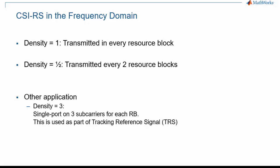Let's talk about the frequency and time domain characteristics of CSI-RS, starting with the frequency domain. There are two main types of CSI-RS in the frequency domain: density one and one-half. With density one, CSI-RS are present in every resource block. With half density, they are present in every other resource block. The third type, very dense in the frequency domain with density three, is called Tracking Reference Signal, as mentioned earlier. This type of CSI-RS is single port, whereas the other CSI-RS can support up to 32 antenna ports for MIMO application.